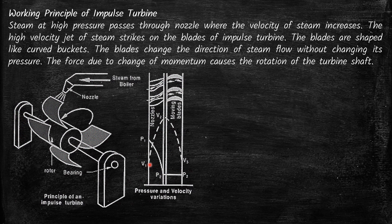When the steam expands in the nozzle, the velocity of the steam increases. We have learned in the previous chapter that the steam nozzle is used to increase the velocity of steam, and one of the applications is in the steam turbine. When the steam flows over the moving blade, kinetic energy — which is by virtue of the velocity of the fluid — reduces, and this reduction in kinetic energy is converted to work.